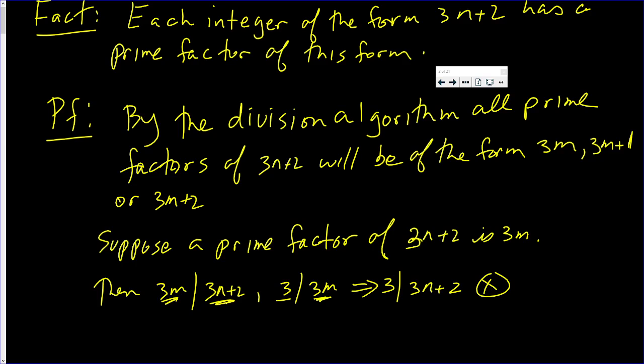3 only goes into numbers that, when you divide by 3, have no remainder. When you divide this number by 3, it has a remainder of 2. Another argument is, 3 clearly goes into 3n, and for 3 to go into a sum of 3n and 2, 3 would also have to go into 2. But that doesn't happen. So 3m is dead.